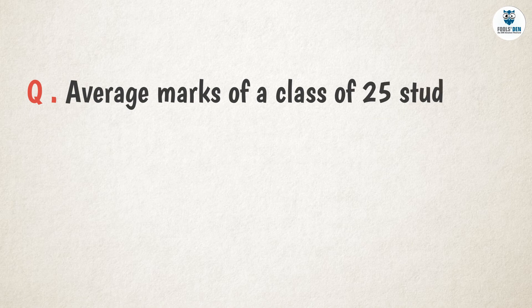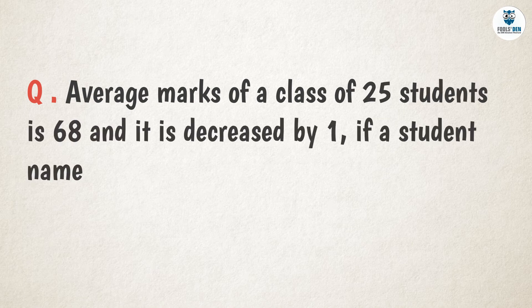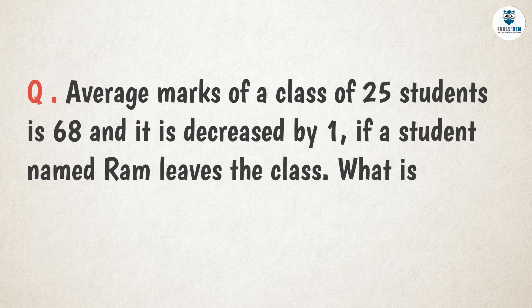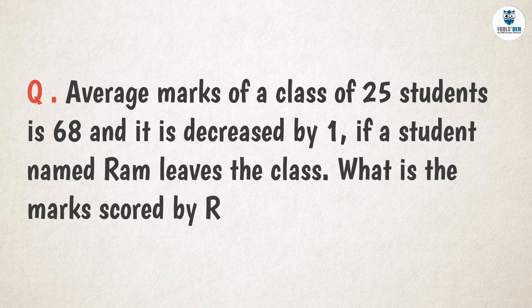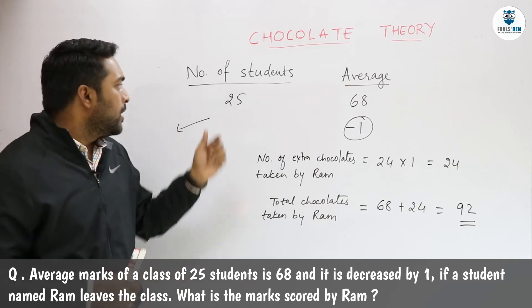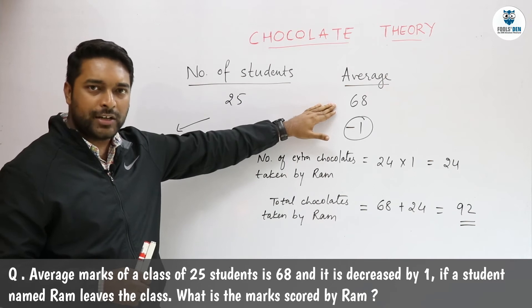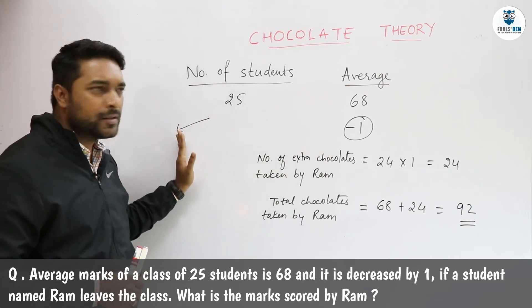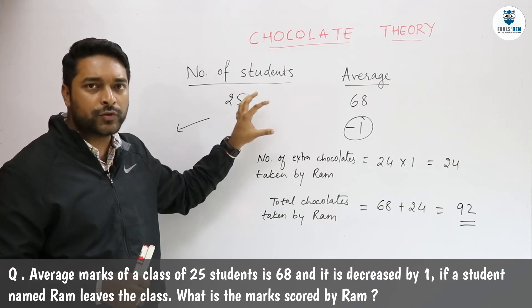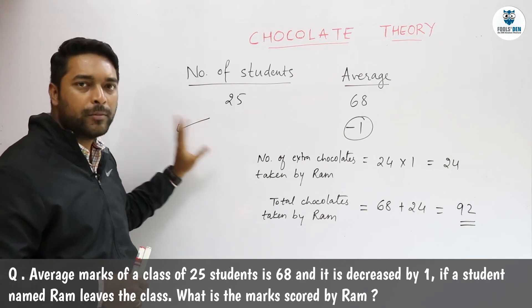Now let us move on to our next question: the average marks of a class of 25 students is 68, and it is decreased by 1 if a student named Ram leaves the class. We have to find what marks Ram scored. In this question we will consider marks as chocolates. There are 25 students in the class including Ram, and each of them has 68 chocolates. When Ram leaves, the number of chocolates with the rest of the 24 students decreases by 1, and we have to find how many chocolates Ram took with himself.